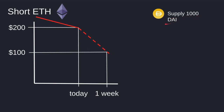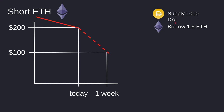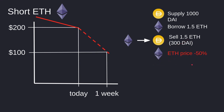Let's say that I have 1000 DAI. I'm going to supply this 1000 DAI to Compound and use it as collateral to borrow some ETH. Again, the collateral ratio on Compound is 65%. To be safe, we're going to borrow less than the collateral ratio — around 30%. ETH today is 200, so I'm going to borrow around 300 DAI worth of ETH, which turns out to be 1.5 ETH. I'm going to immediately sell this ETH for DAI.